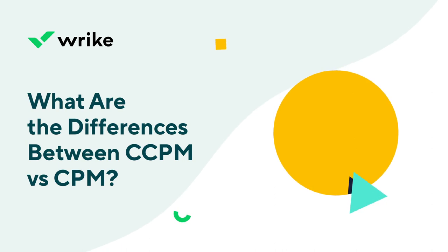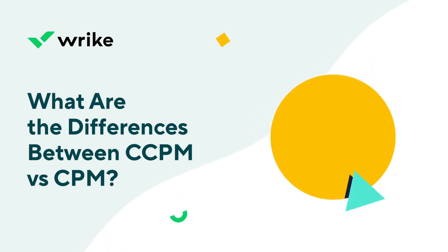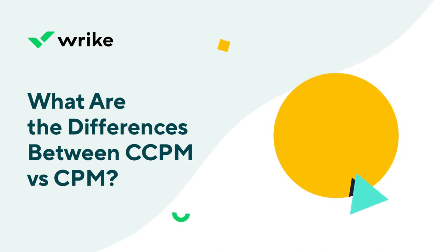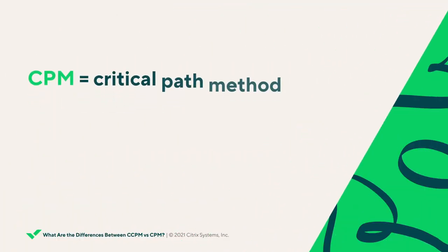In the project management world, scheduling projects can be a difficult endeavor with a lot of moving parts. That's why there are several project management methodologies that deal explicitly with project scheduling. Today we're talking about CPM or Critical Path Method and CCPM or Critical Chain Project Management. Let's start by looking at Critical Path Method.